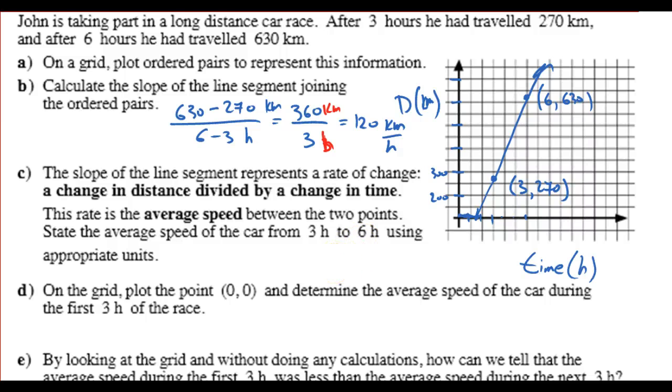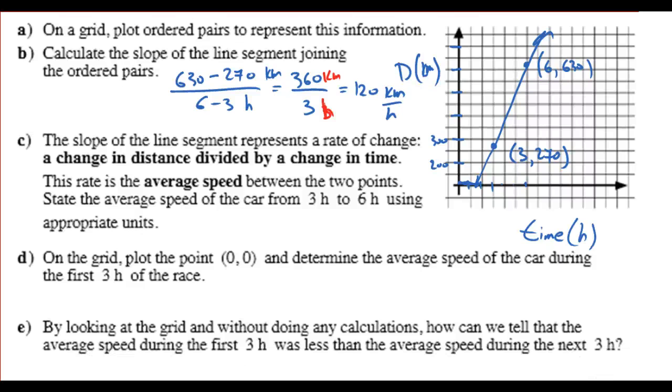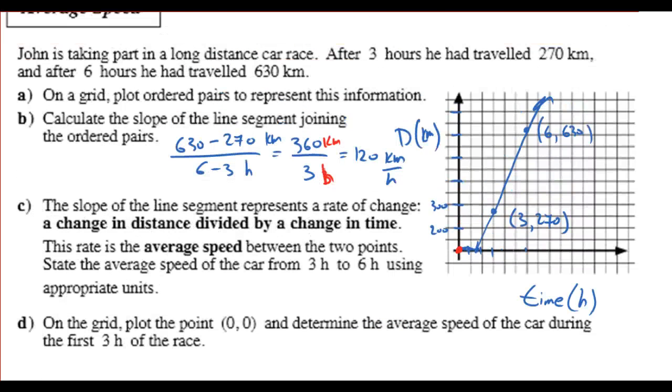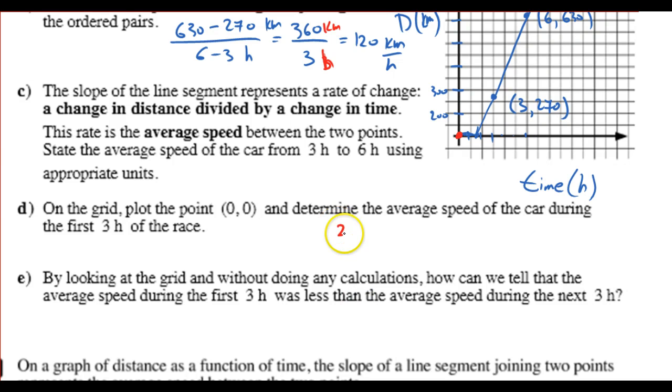That is the average speed. Part D, on the grid, plot the 0, 0 and determine the average speed of the car during the first 3 hours of race. 0, 0 is here. The average speed of the car for the first 3 hours. Well, all we have to do for that is just get the distance traveled. He traveled in the first 3 hours from 0 to 270. So, we'll go 270 minus 0. That's the distance in kilometers. That's the change in distance. Sometimes, you might see a little triangle like this. Change in distance. Triangle represents the word change. So, change in distance over the change in time. And, the change in time was 3 hours. So, we're going to get 270 divided by 3, which is 90. 90 kilometers per hour.